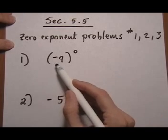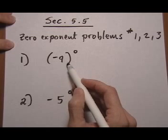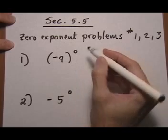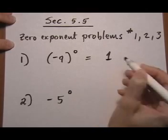So on number 1 here we have minus 9 in parentheses to the zero. That means the minus and the 9 both get the zero power, so the answer will be 1.